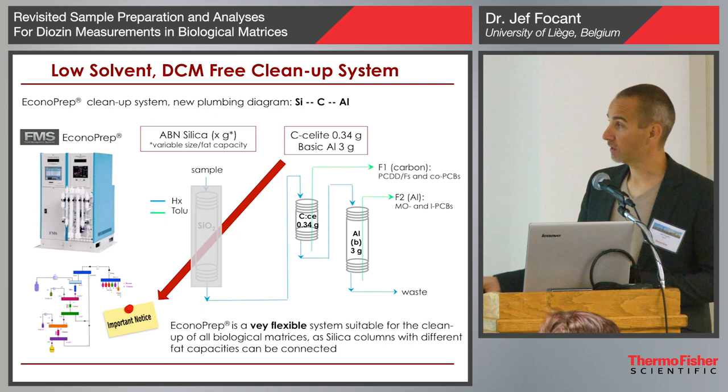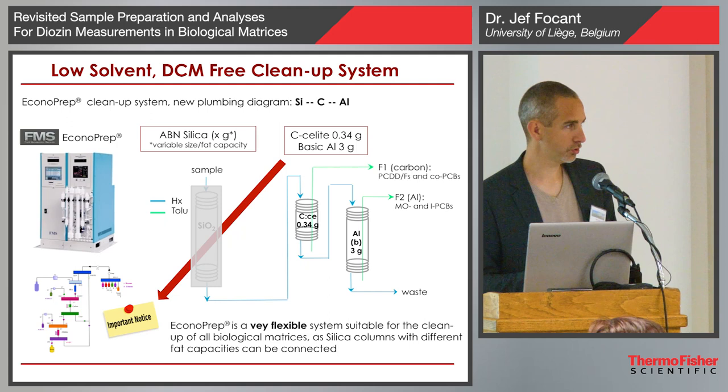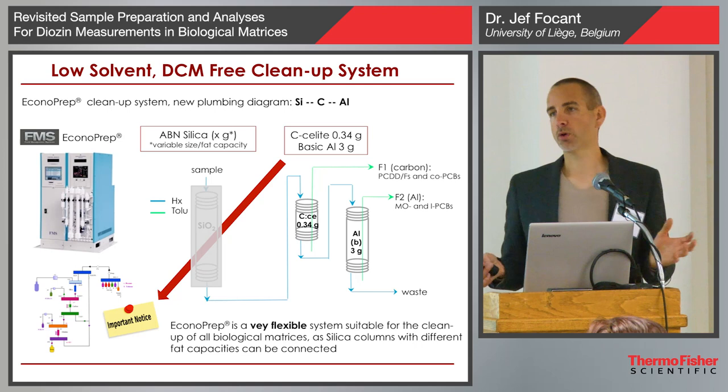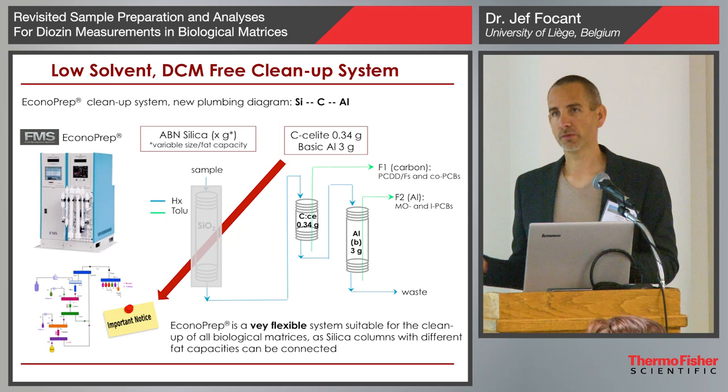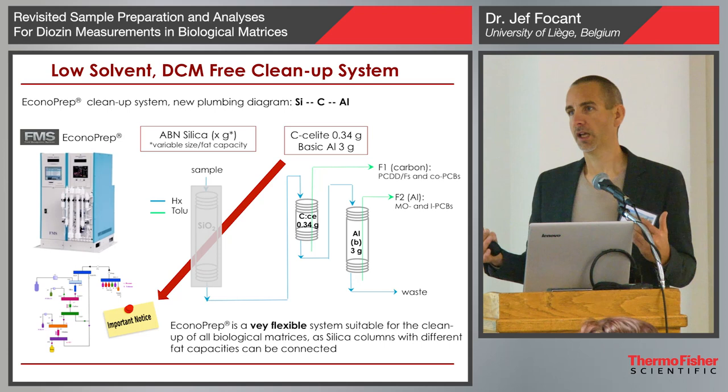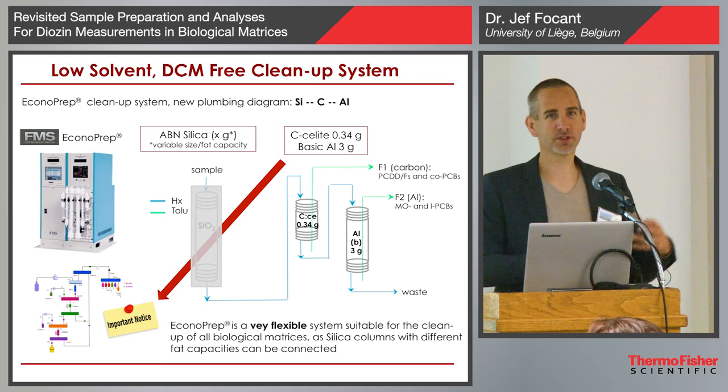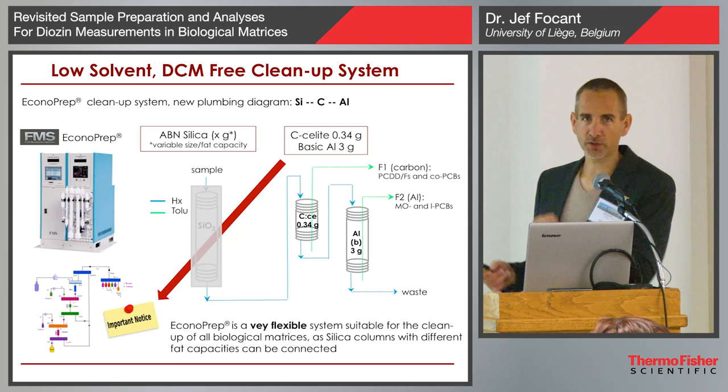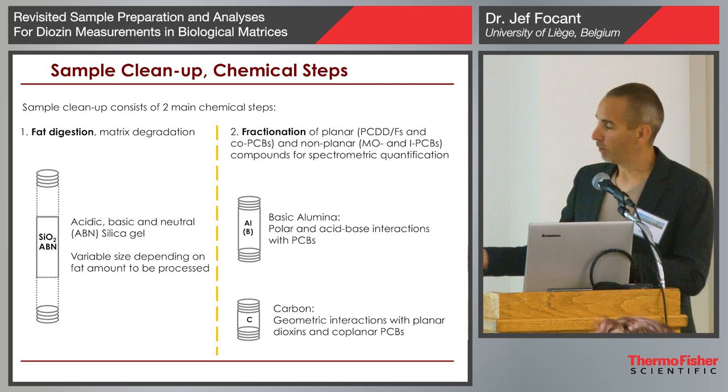You can accommodate the size of your silica column — which is responsible for fat digestion — to the type of sample you run. If you're on a serum sample, working on 20 milliliter or 10 milliliter of serum, human serum is about 0.5% fat depending on your cholesterol level. But if you take a piece of meat, that can be 35, 40, 50% fat. So you need different capacity in terms of fat digestion. You just adjust the size of the silica column.